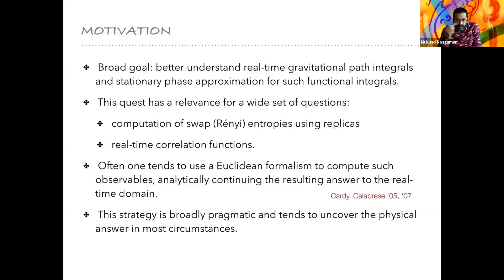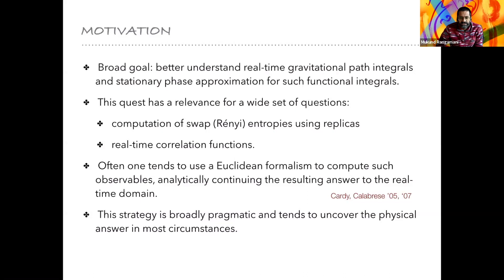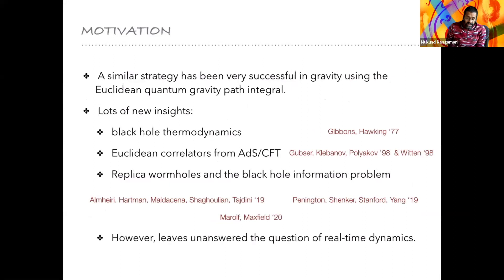We often use the Euclidean formalism to compute such observables, and then analytically continue in some parameter to get the final answer in the real-time domain. This is widely successful — I put in one reference here of the famous calculation done by Cardy and Calabrese for computing growth of entanglement following a quantum quench, done in 2D CFTs using Euclidean methods with answers extended to the physical domain. From a practical standpoint, this is very pragmatic: it tells us what happens in the Euclidean domain, and we can use it to inform what the physical answer must be.